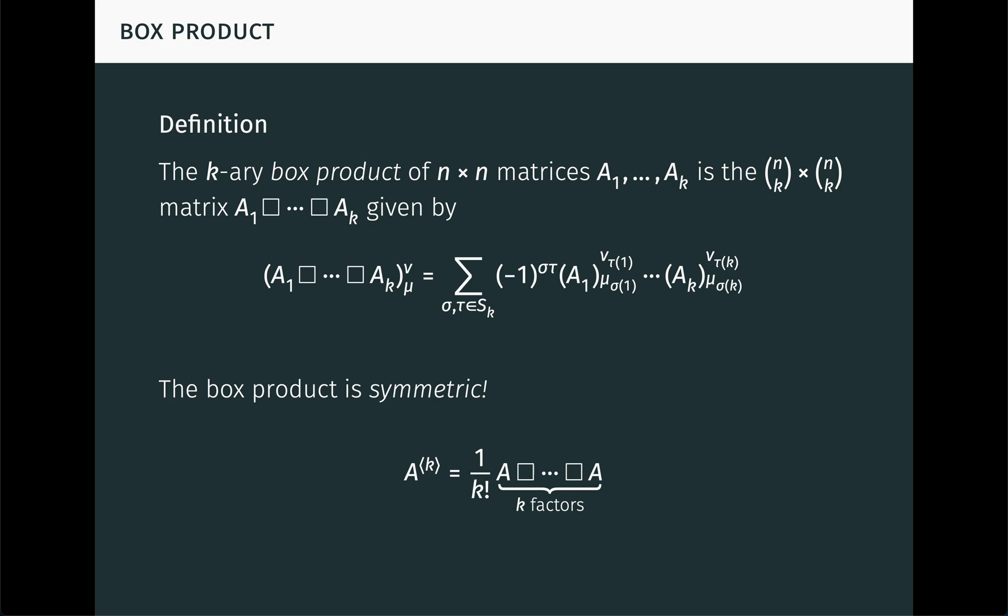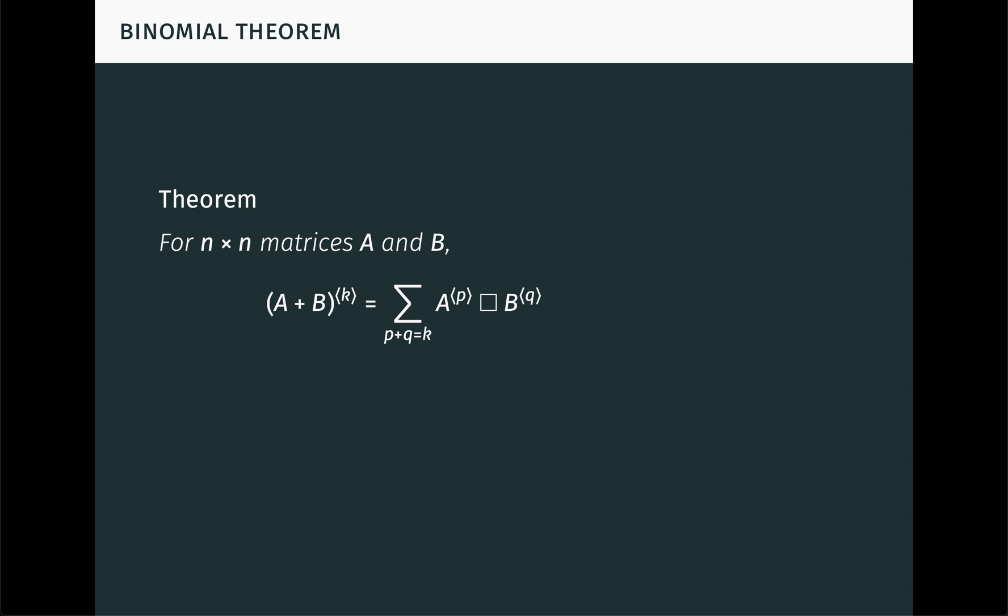Let's take the box product for a spin and see what it can do. First, we can prove a version of the binomial theorem for the box product using symmetry. For n by n matrices A and B, (A+B)^⟨k⟩ is equal to the sum over p and q adding to k of A^⟨p⟩ ⊡ B^⟨q⟩. On the right hand side here, we're using shorthand notation, which expands like this. This formula is very powerful.